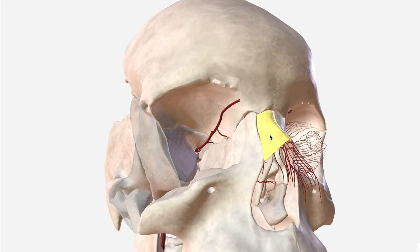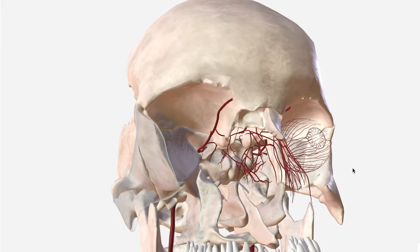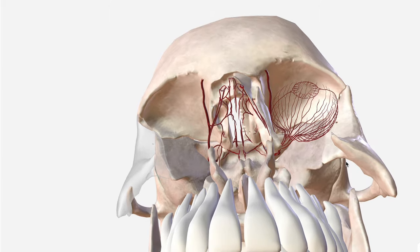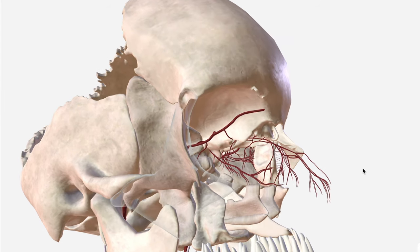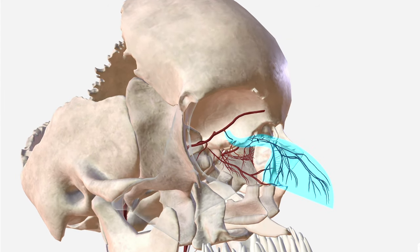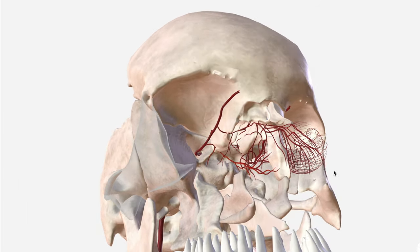If we remove the nasal, axilla, lacrimal, and ethmoid bones, we'll get a slightly clearer picture of their complex course. That is the anterior ethmoidal here, with its septal and nasal branches, and that is the posterior ethmoidal — both of which contribute to the blood supply of the nasal cavity. Let's bring all those bones back in now.